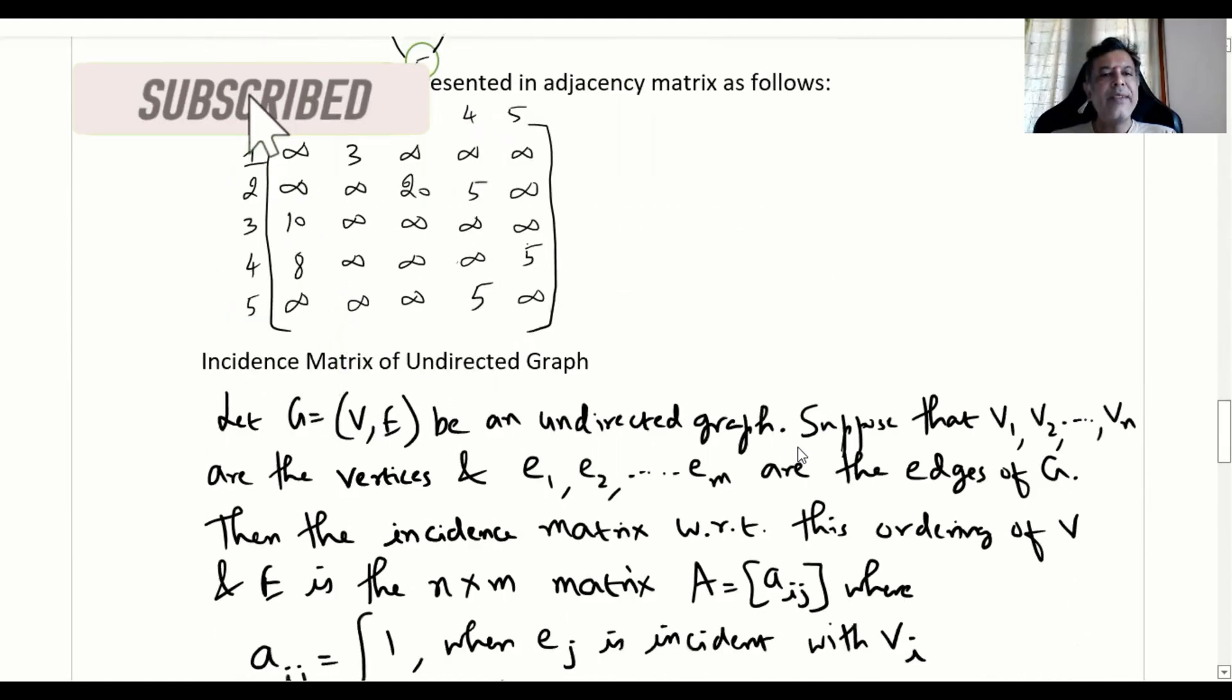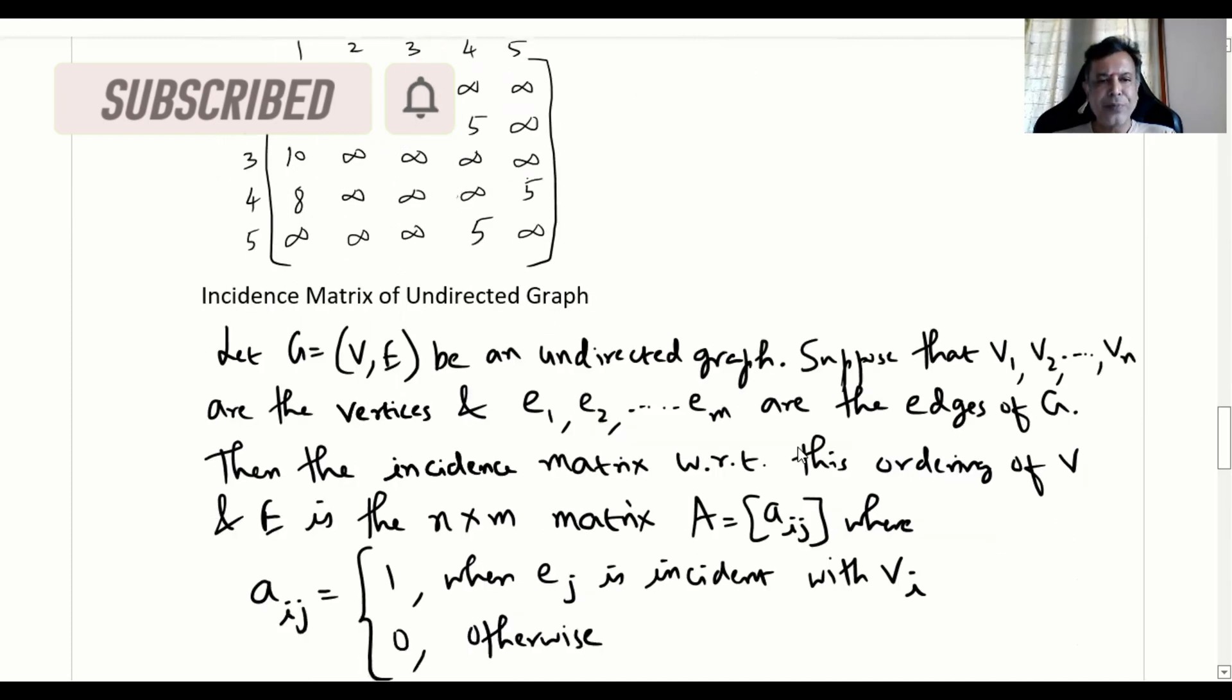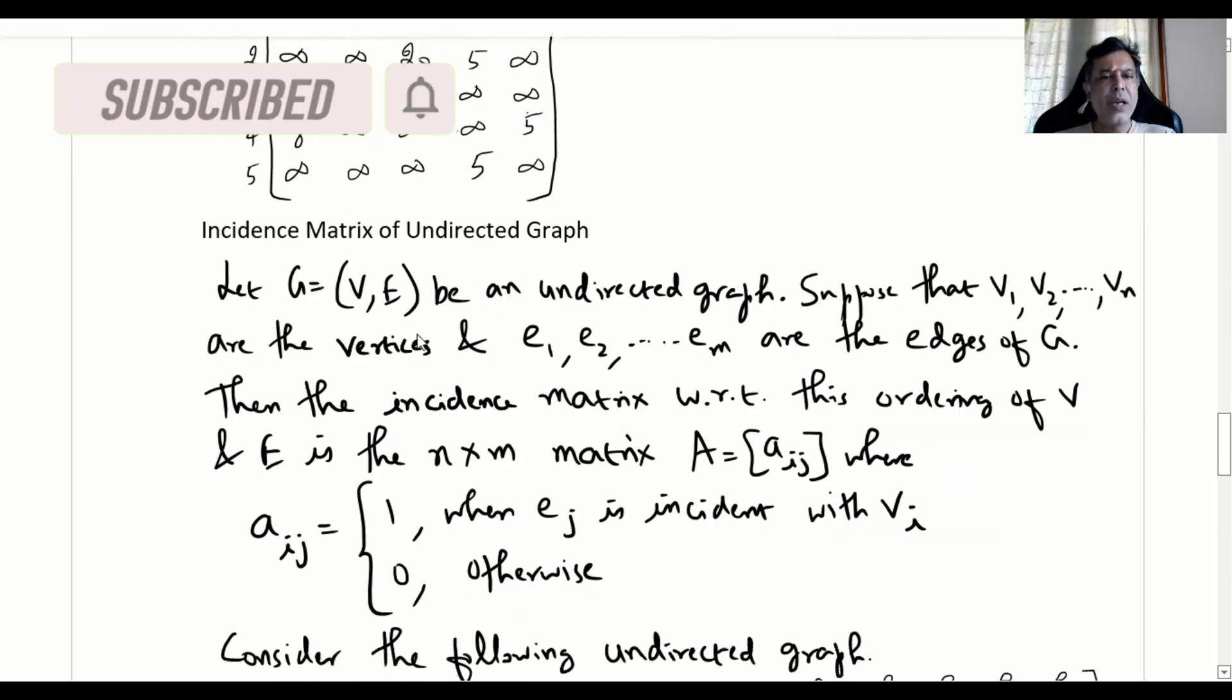Now, let us understand about incidence matrix of undirected graph. Let G = (V, E) be an undirected graph. Suppose that v1, v2 and so on up to vn are the vertices and e1, e2 and so on up to em means n vertices, m edges. Then the incidence matrix with respect to this ordering of V and E is an n by m matrix where the element A[i,j] will take value 1 when the edge ej is incident with vertex vi. Otherwise, it will take value 0.